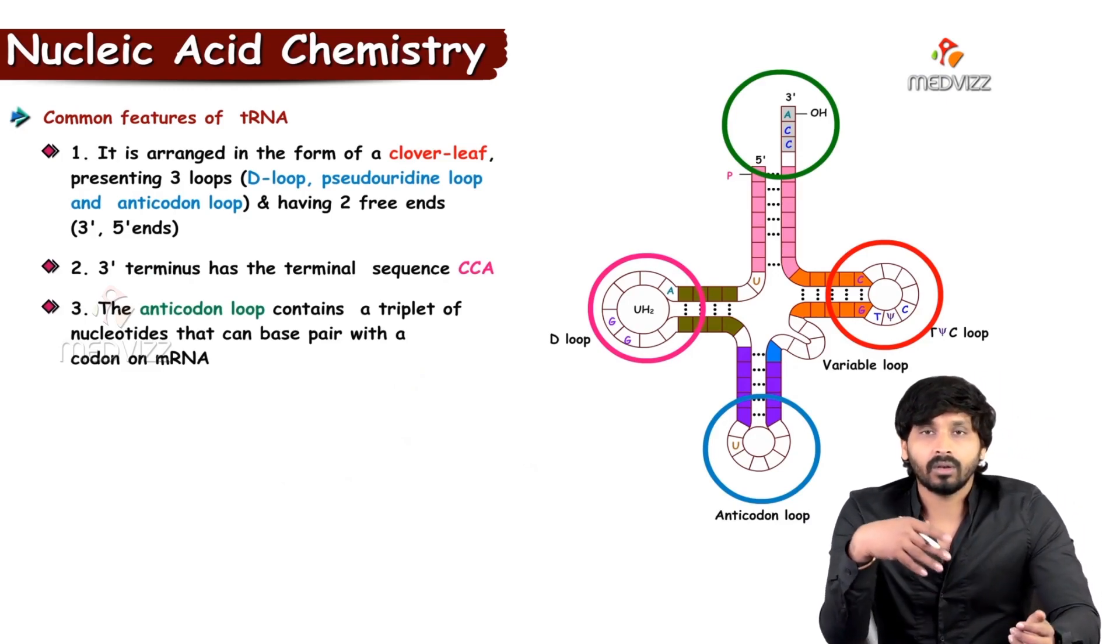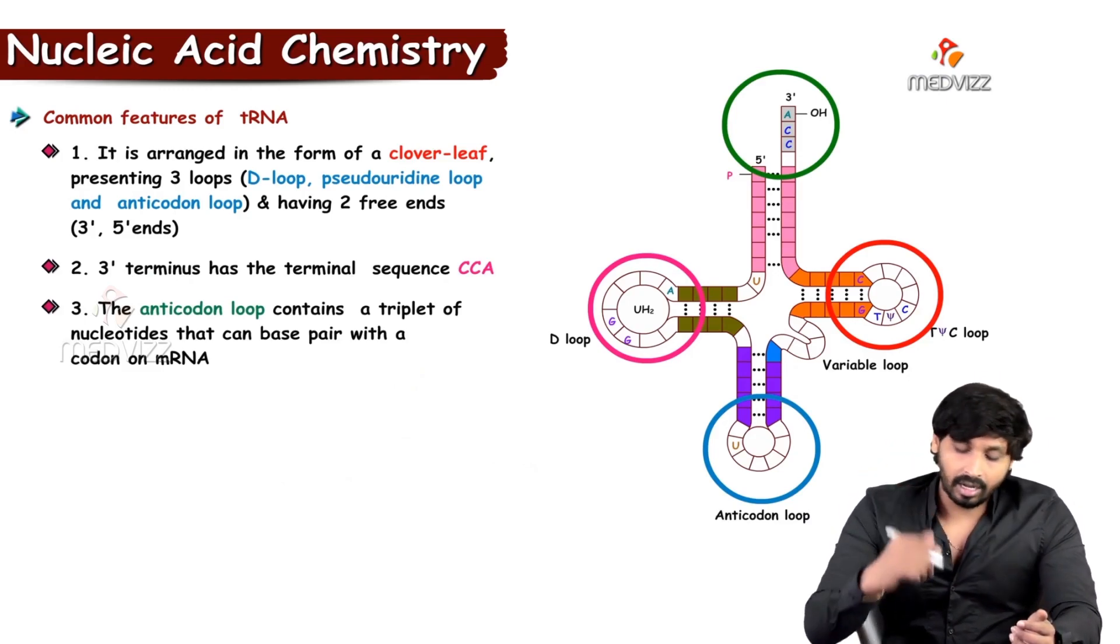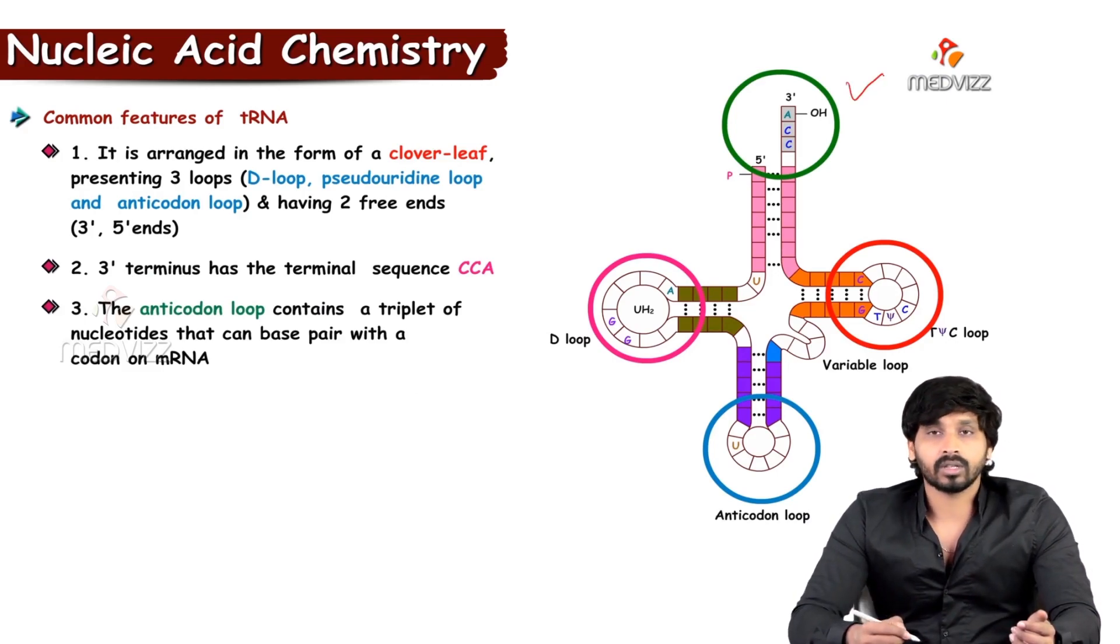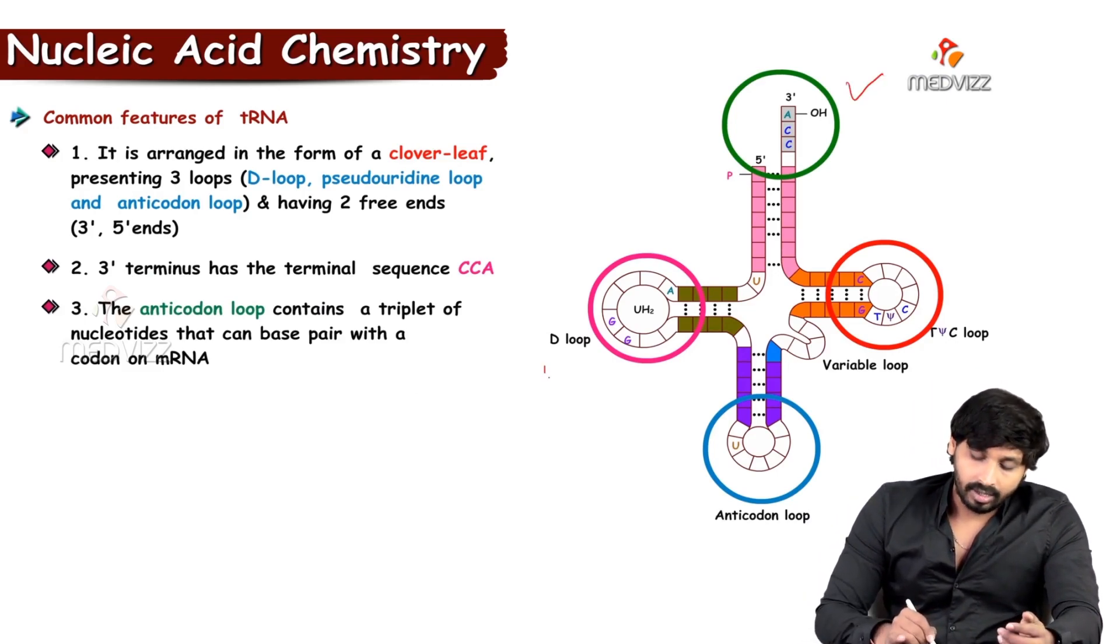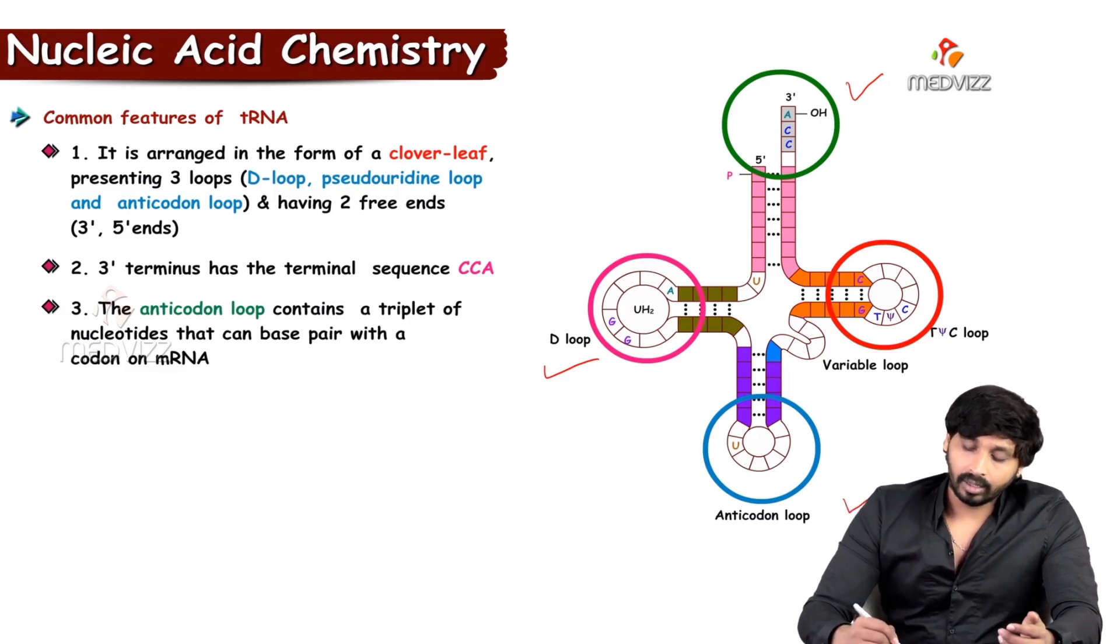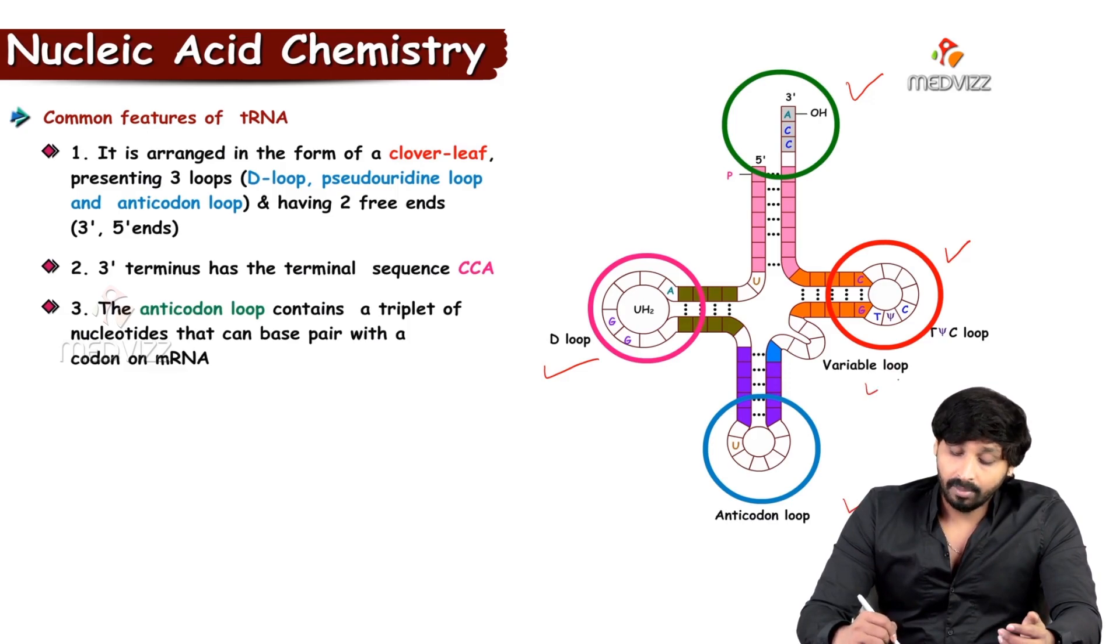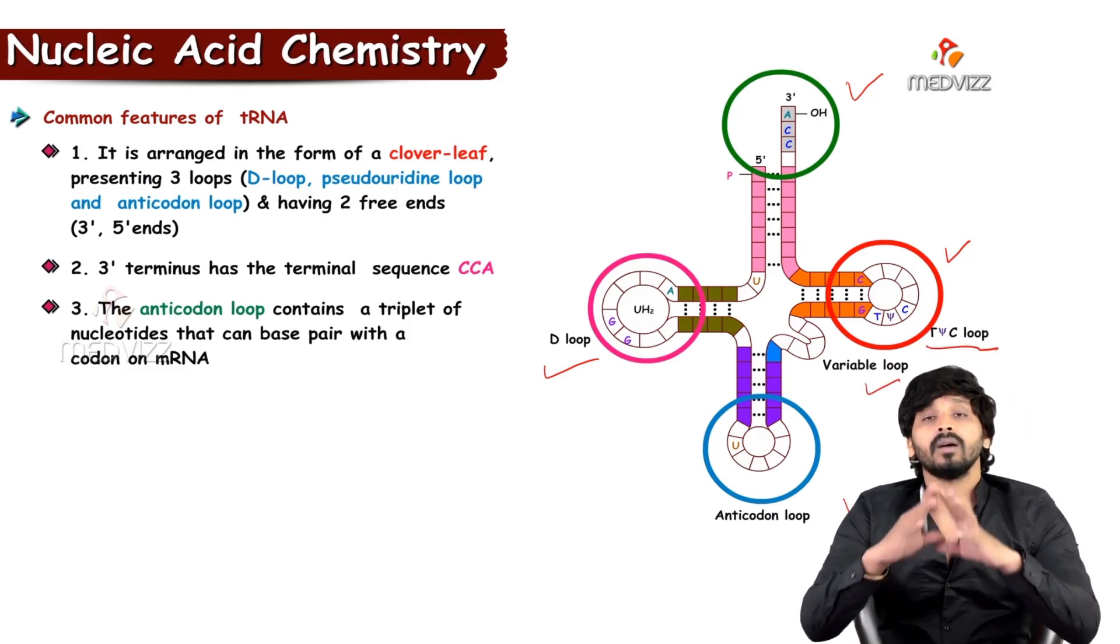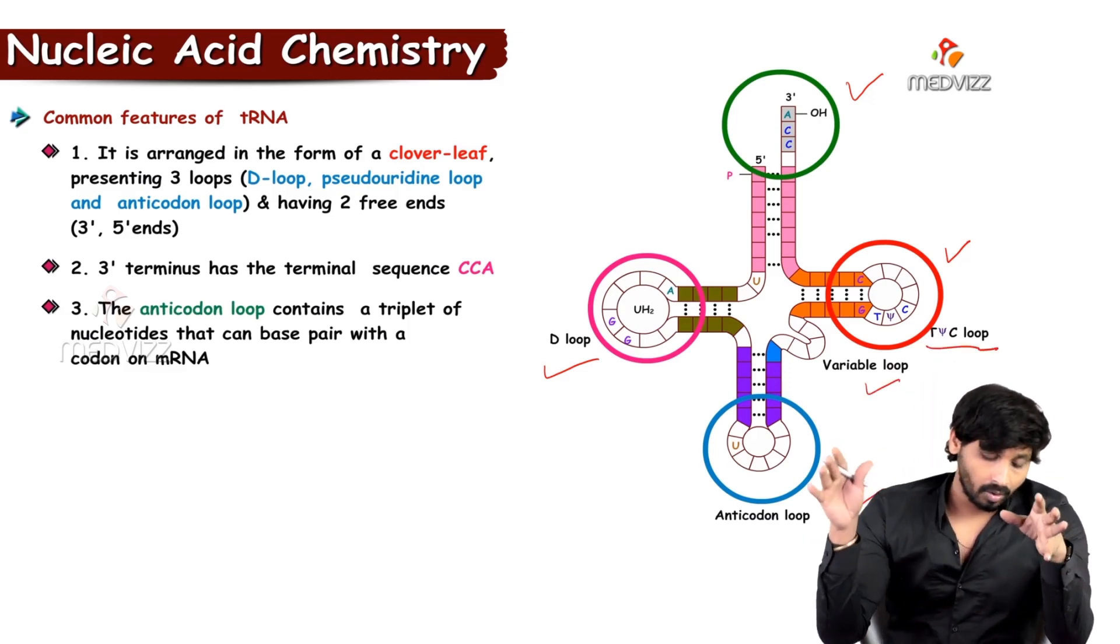The common features: as I mentioned, the green color one, this is 3 prime hydroxyl arm. One is D arm, other one is anticodon loop, other one is variable arm, and the tSC loop. Each arm is having their own functions.